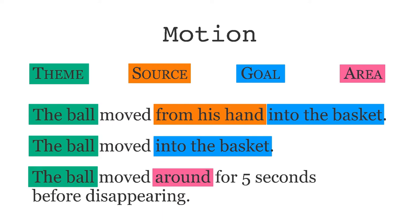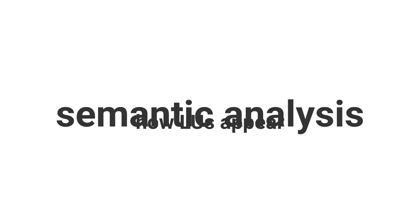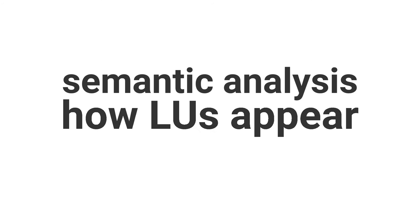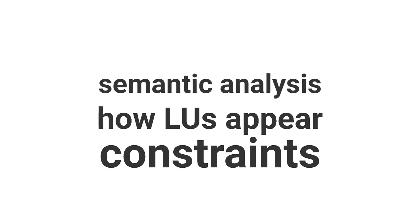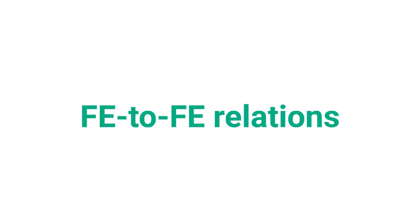Note that, although area, goal, and source are all core frame elements in the motion frame, they don't need to — and sometimes actually can't — all occur in the same sentence. The semantic analysis of how lexical units appear in text indicates that there are constraints in the combinations of frame elements with each other. We call those frame element-to-frame element relations.